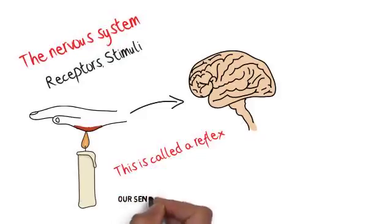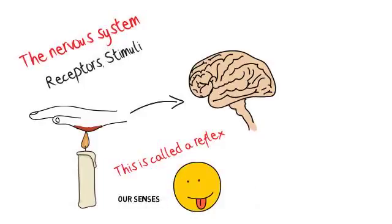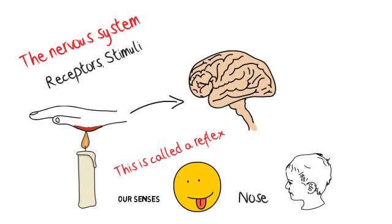We also use the nervous system for our senses. We have receptors on our tongue for taste, in our nose for smell, ears for sound, and other receptors around the body.